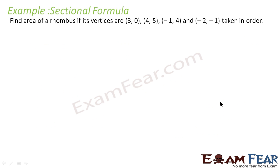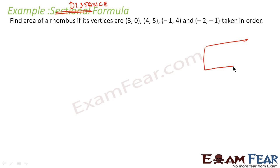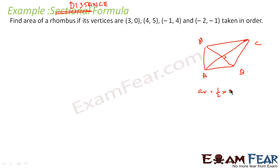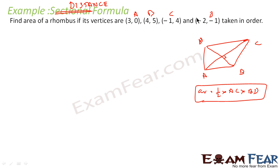Let us take one more example: find the area of a rhombus if the vertices are (3, 0), (4, 5), (−1, 4), and (−2, −1). This question uses the distance formula. In a rhombus, the diagonals are perpendicular, so the area equals (1/2) × d1 × d2, where d1 = AC and d2 = BD.